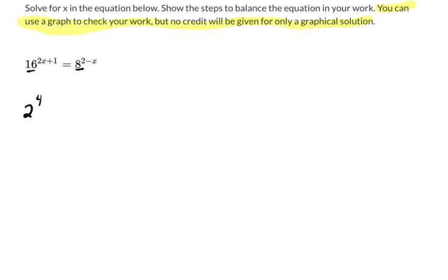Because you could write 16 as 2 to the 4th, and then that's the 2x plus 1, and that's got to equal 2 to the 3rd to the 2x minus 2 minus x. Now, the laws of exponents tell us I can multiply this 4 by the 2x and 1, and this 3 by the 2 minus x. Let's do that.